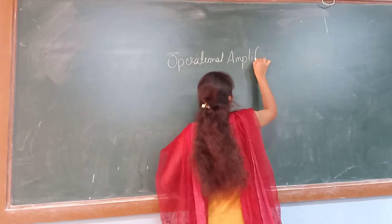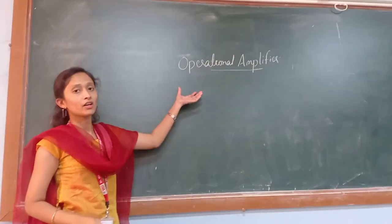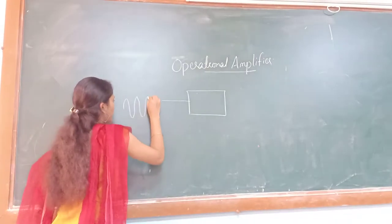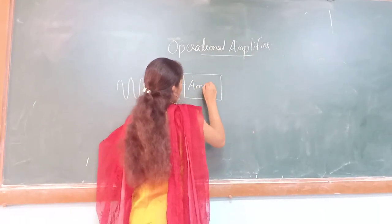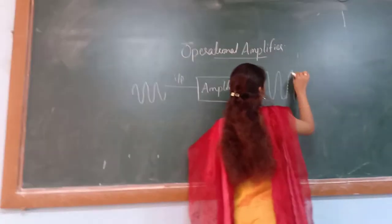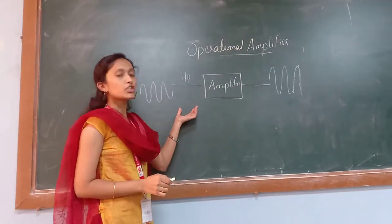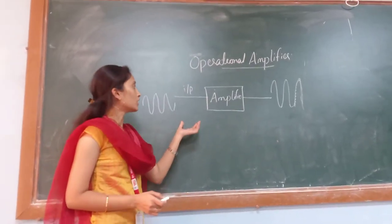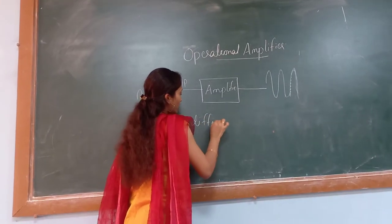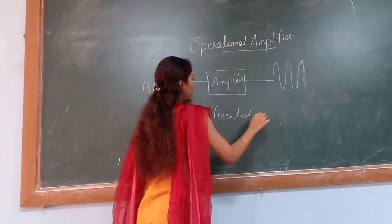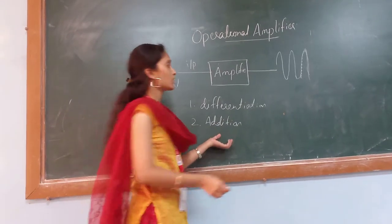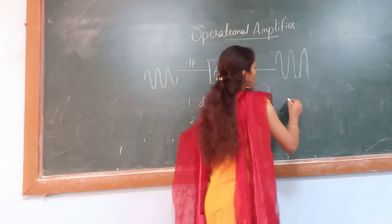What is meant by an operational amplifier? Basically, an operational amplifier is an amplifier. In early days, digital computers were not evolved, so mathematical operations were being performed using the operational amplifier. Those operations are differentiation, addition, subtraction, and integration. By taking a few resistors and capacitors, it is possible to perform these mathematical operations. That is known as an operational amplifier.